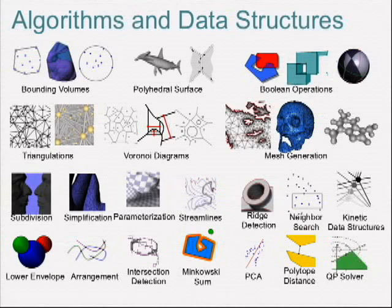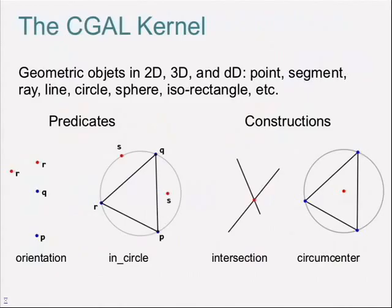These data structures are built on the CGAL kernel, which wraps up elementary types like points and segments — elementary geometric entities. Next, you have predicates, such as an orientation test: given three points P, Q, R, do they perform a left turn, right turn, or are they collinear? Or an in-circle predicate: given three points P, Q, R defining a circumcircle, does point S lie inside, outside, or on that circle? The third category is constructions: you take geometric objects and compute new entities, like an intersection point or the center of a circumcircle.